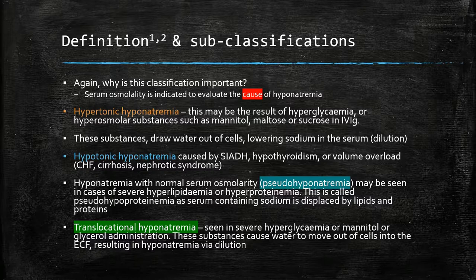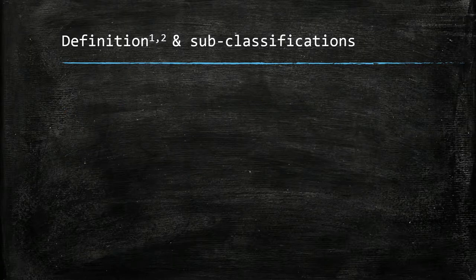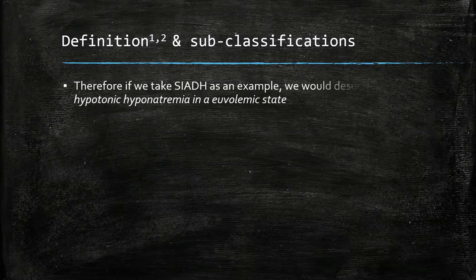Pseudo-hyponatremia is hyponatremia with normal serum osmolality and can be seen in severe hyperlipidemia or hyperproteinemia, where the protein or lipids displace the liquid. Translocational hyponatremia is seen in severe hyperglycemia or mannitol or glycerol administration, where these substances cause water to move out of cells into the ECF, resulting in hyponatremia via dilution. Bringing it all together, SIADH would be classified as hypotonic hyponatremia seen in a euvolemic state.